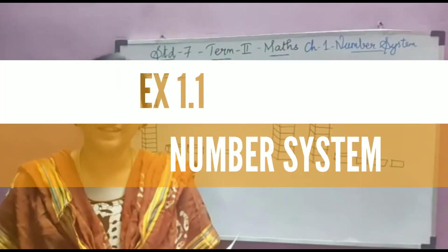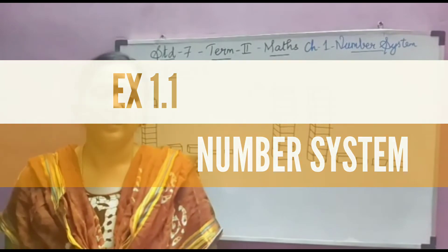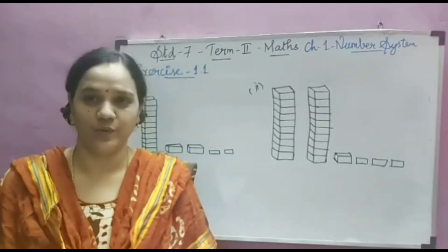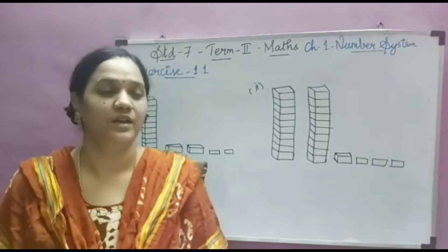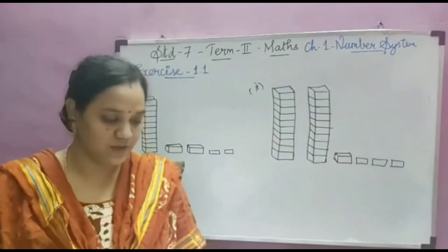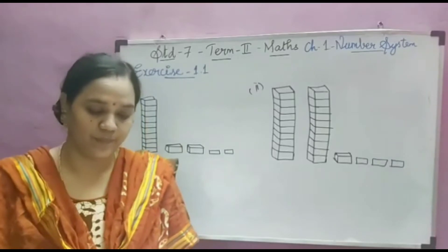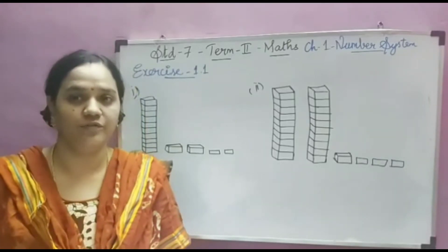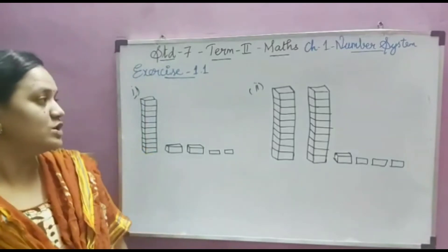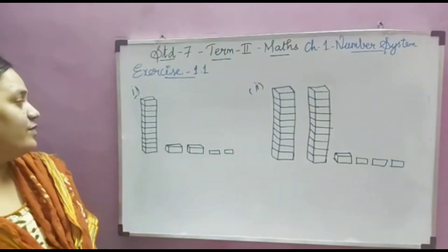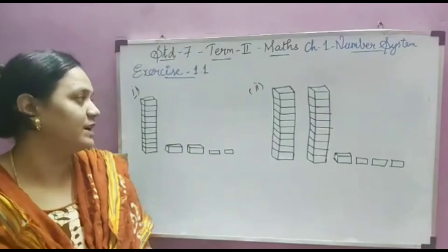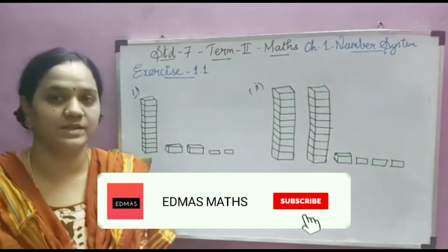Hi children, this is Kornadipa. Today in this video we are going to learn exercise 1.1. The first problem is write the decimal numbers for the following pictorial representation of numbers. We are going to mention this pictorial representation as decimal numbers.